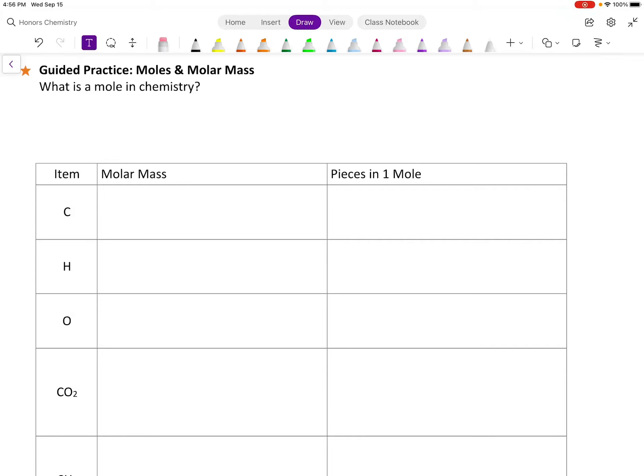Welcome to this guided practice for chemistry on moles and molar mass. So the first thing we want to know is what is a mole in chemistry? A mole in chemistry is a quantity of substance, and that quantity is equal to Avogadro's number, which is 6.022 times 10 to the 23rd pieces.